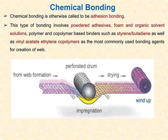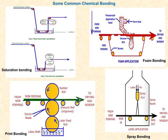In chemical bonding, after creating layers, the chemical bond is applied. After the chemical bonds are applied and the fabric dries, the layers are joined together. Some chemical bonding techniques used are: saturation bonding, foam bonding, printing bonding, and spray bonding.